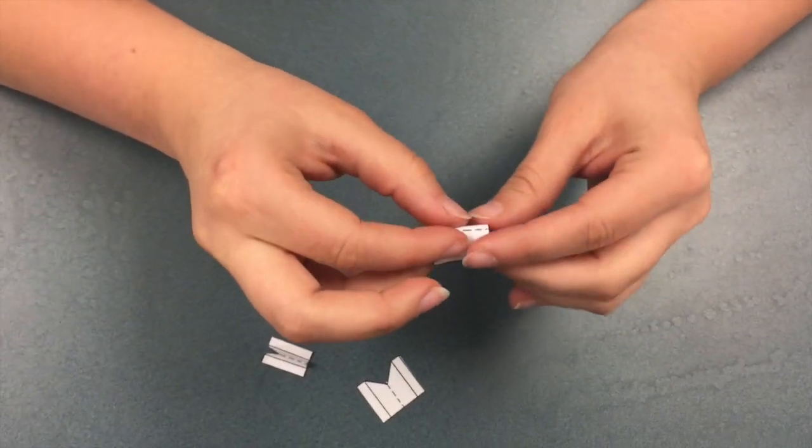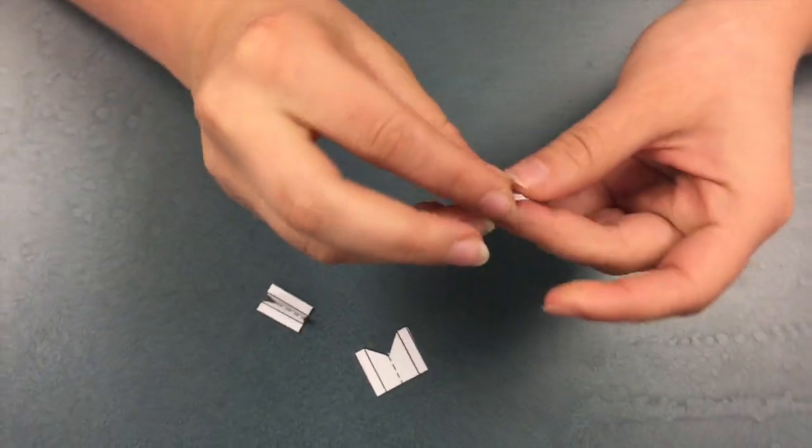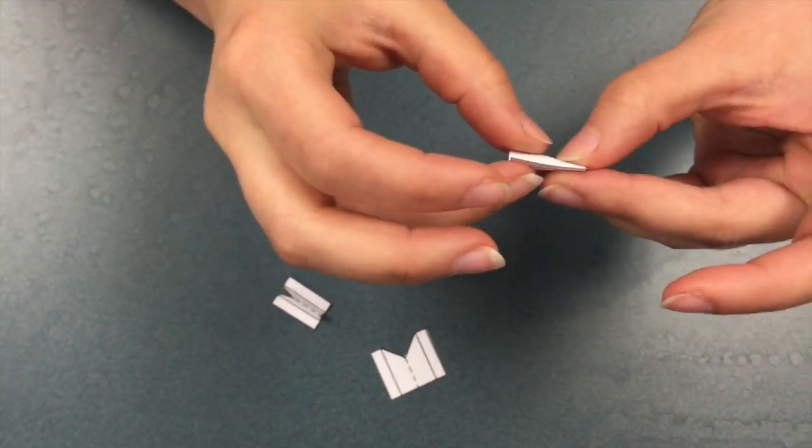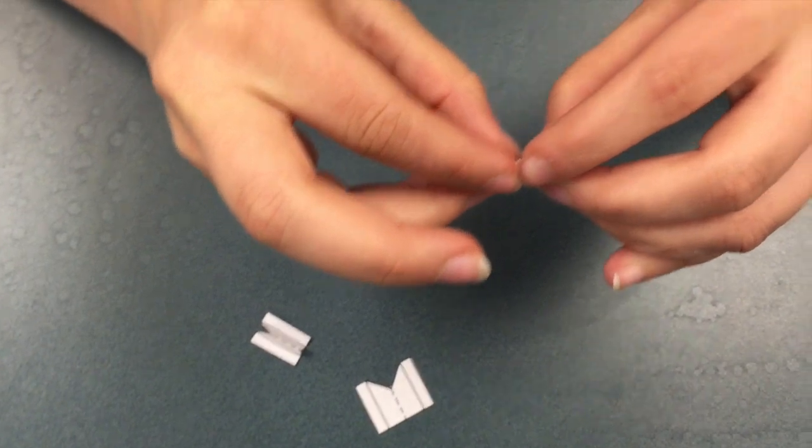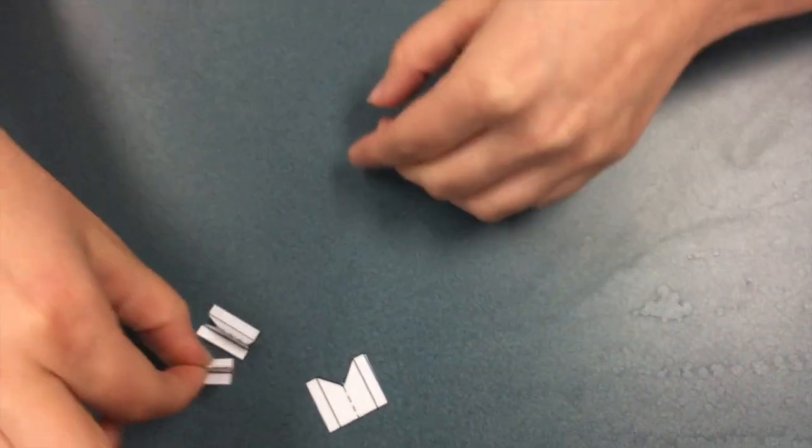So next you take your three fins and you fold them along the lines, once along the dotted line like this, and then again along the solid lines like this. So you'll have three fins.